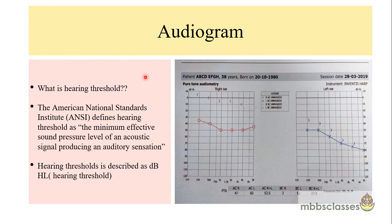What is the hearing threshold and how is it measured? According to the American National Standards Institute, the hearing threshold level is defined as the minimum effective sound pressure level of an acoustic signal — here it is a pure tone — which produces an auditory sensation. The hearing threshold is described as decibel HL.